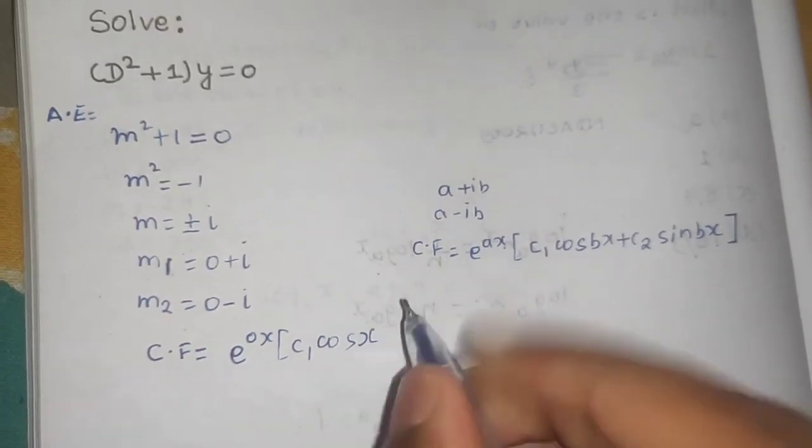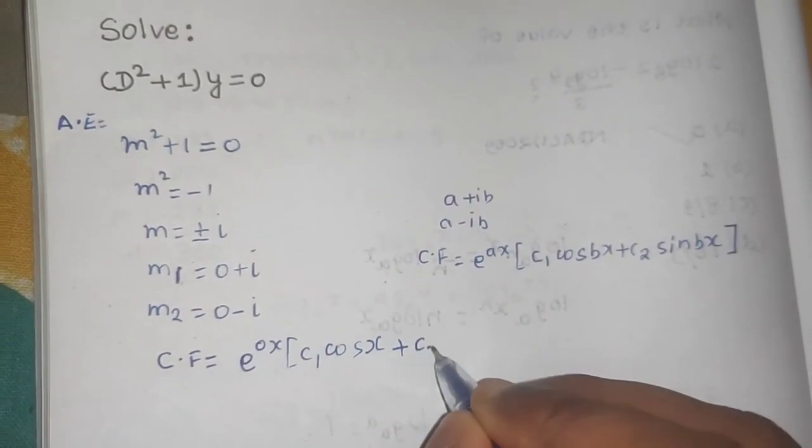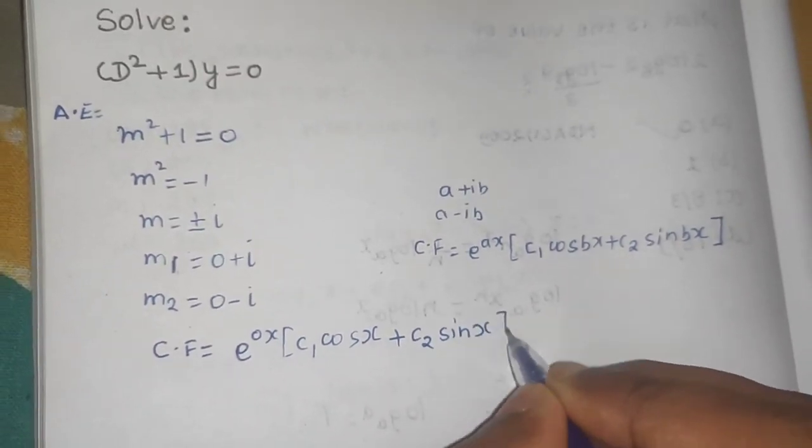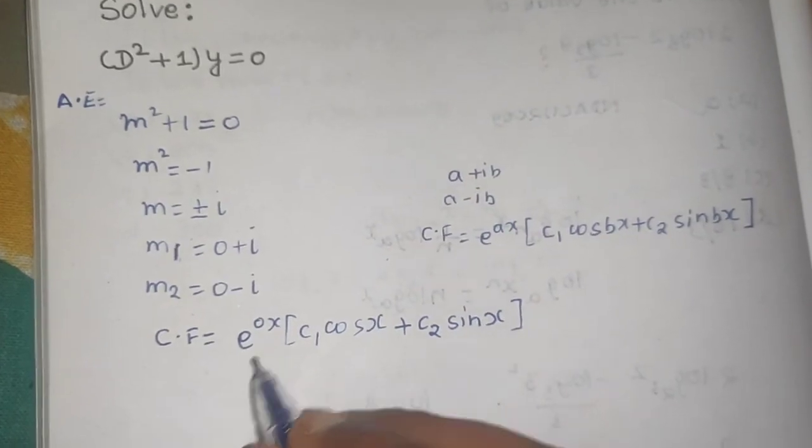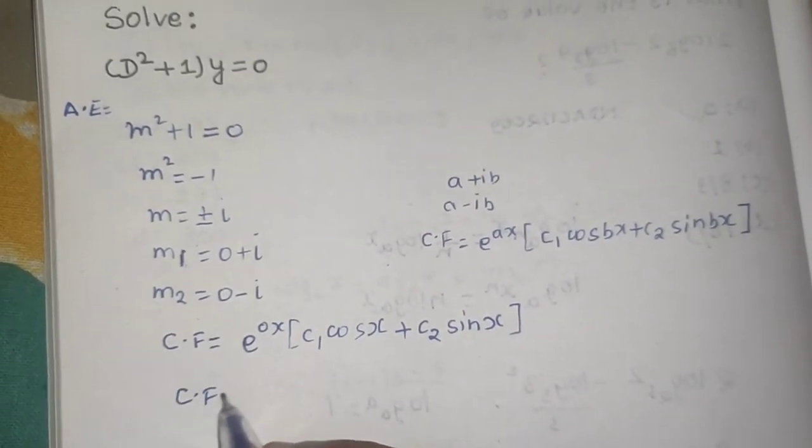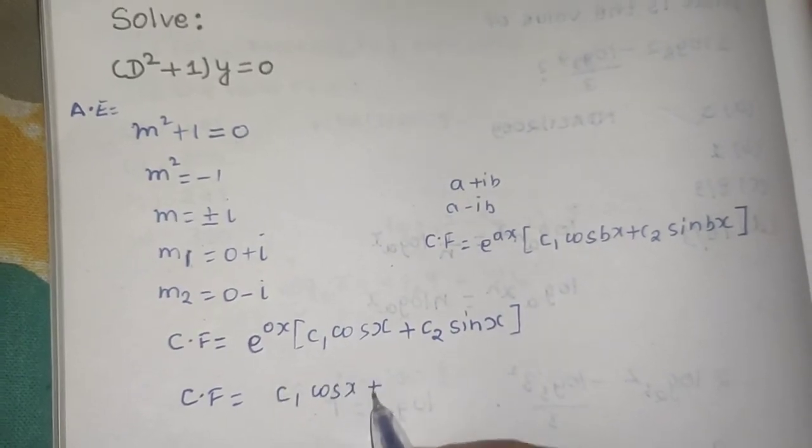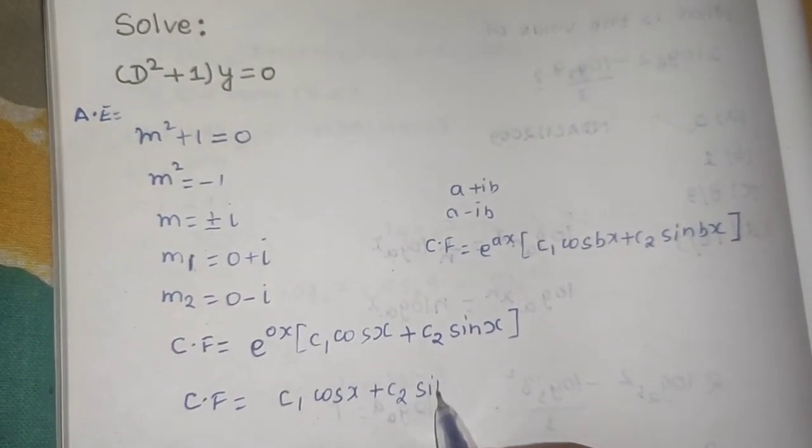E power 0, so my complementary function is c1 cos of x plus c2 sin of x.